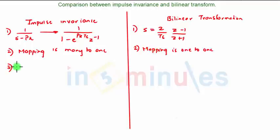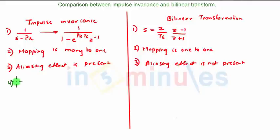The third point: in impulse invariance, the aliasing effect is present, whereas in bilinear transformation, aliasing effect is not present. The fourth point: impulse invariance is not suitable to design high pass and band reject filters.